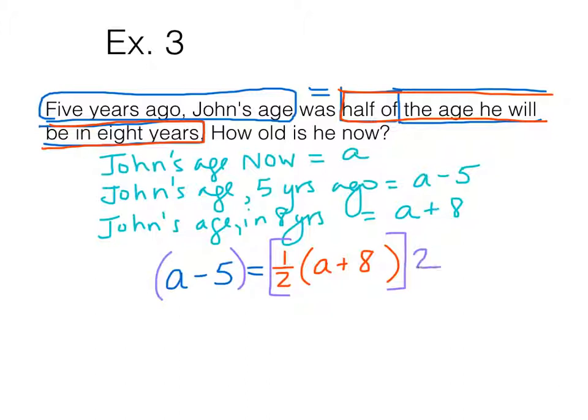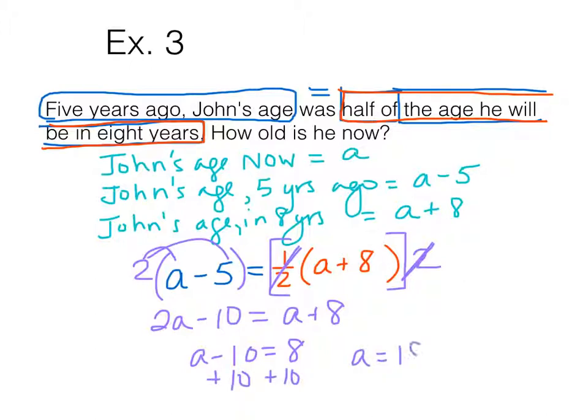Let's get rid of the 1 half by multiplying. I only used brackets because of the parentheses. The 1 half and the 2 are going to cancel. So I now have 2 times A minus 5, or 2A minus 10, equals A plus 8. I can subtract A from each side. Add 10 to each side. John's age now, which is our value of A. So John is 18 years old.